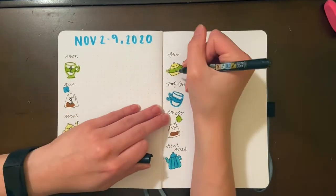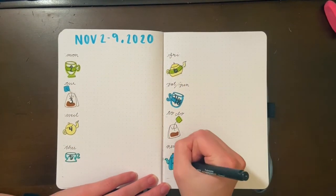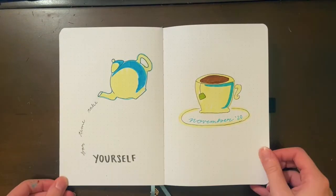So here's where I realized that the week actually ends on the 8th, but lucky for me, a 9 to an 8 is not the hardest switch to make. All right, here is my final flip through for my November setup.